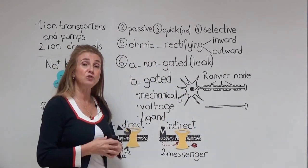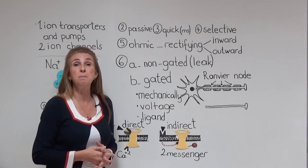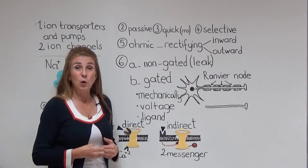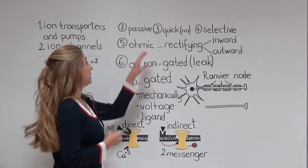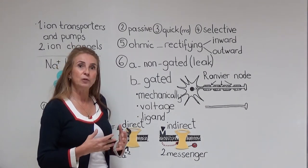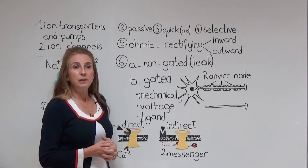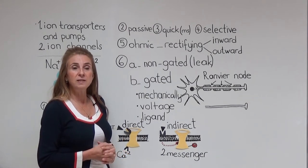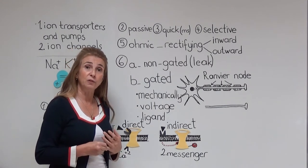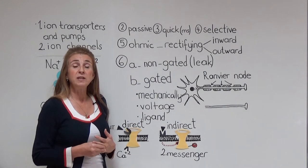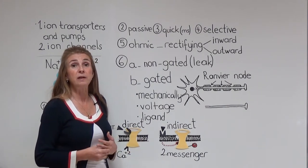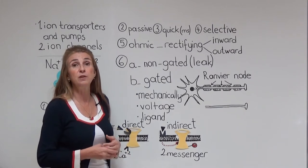The second property is that the passage of ions through ion channels is passive, which means it does not use metabolic energy — no ATP consumption happens. The passage is by diffusion, or more precisely, electrodiffusion, because the passive movement of ions is produced by two types of forces: one is the electrical force, which is the membrane potential, and the other is the concentration difference of the ion between the intracellular and extracellular fluids, which is the chemical force.